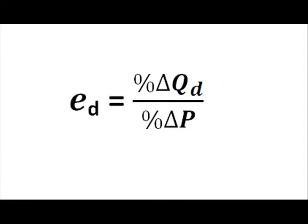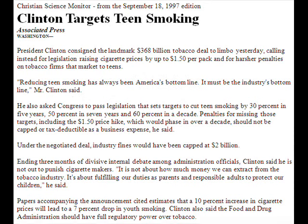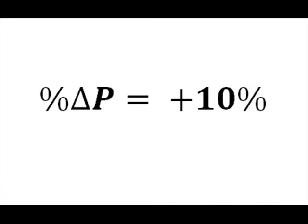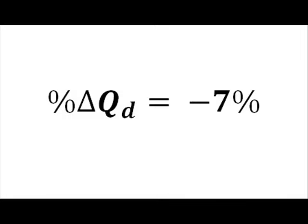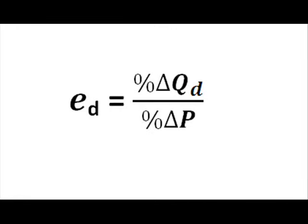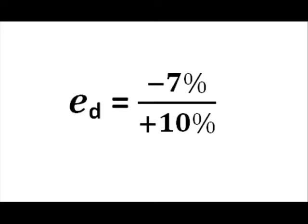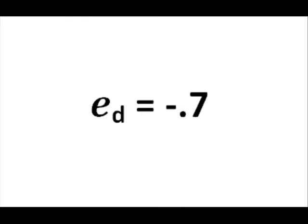How would you actually use this formula? Take a look at this article about the Clinton administration's proposed cigarette tax policy. If you look at the last paragraph, you'll find enough information to determine the elasticity of demand for youth smoking. Remember, elasticity of demand is the percentage change in quantity demanded over the percentage change in price. The article states that for every 10% increase in price, there's a 7% decrease in youth smoking. This means that elasticity of demand is minus 7% over plus 10%, or negative 0.7. But what does it mean?